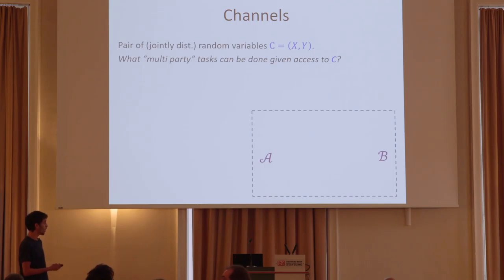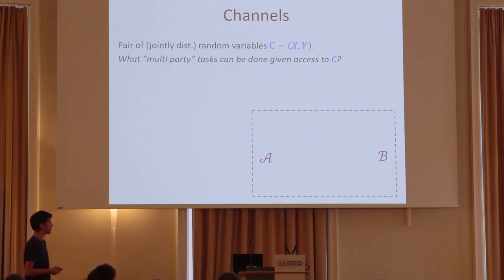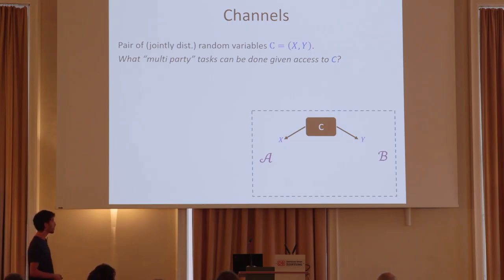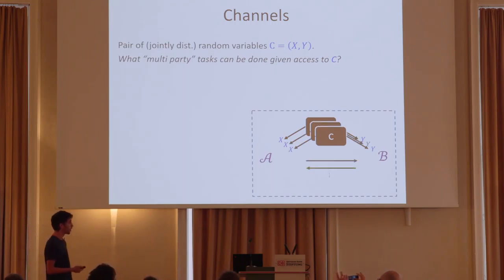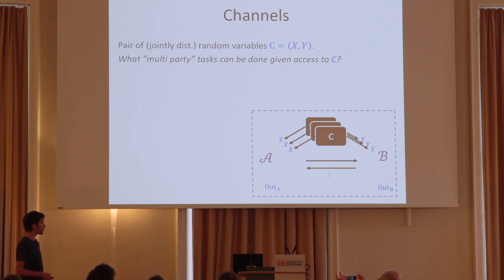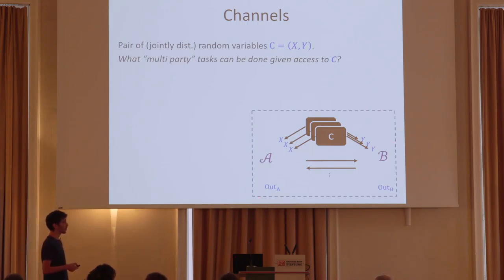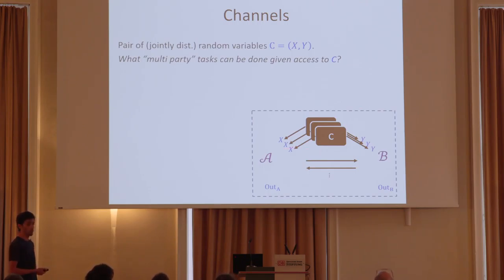Think about Alice and Bob. They want to use the channel, so they can initiate it. Alice gets a sample from X and Bob gets a sample from Y. In order to perform a certain task, they can initiate the channel several times and communicate between them. In the end, they can retrieve an output. We want to understand what the power of such schemes is — what Alice and Bob can do using access to C that they cannot do trivially.